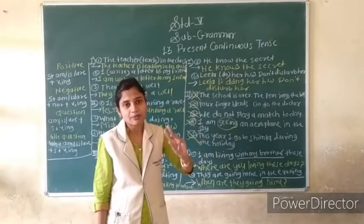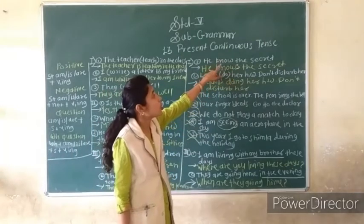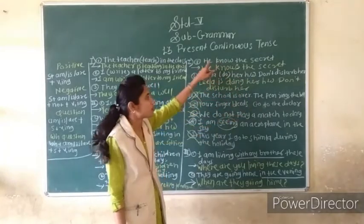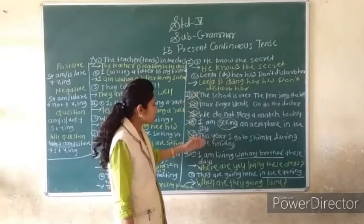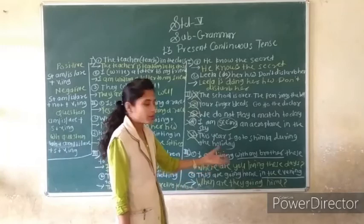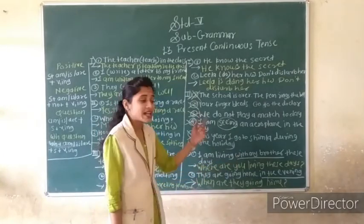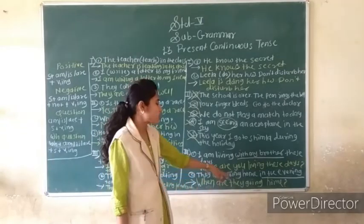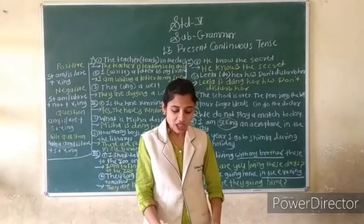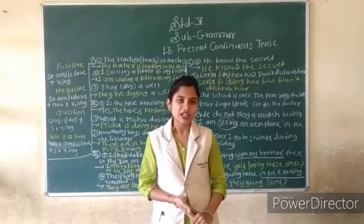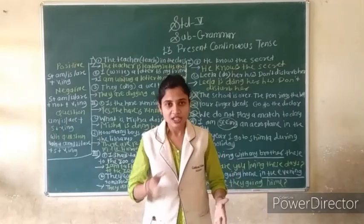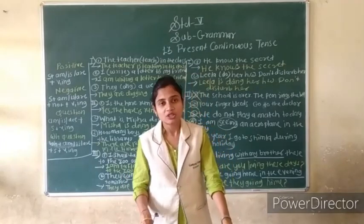Page number 33: Simple present and present continuous — He knows the secret; Leela is doing her homework. Second question: incorrect sentences identified. Third question: WH questions — I am living with my brother these days; Where are you living these days? They are going home in the evening; When are they going home? Fourth question: write ten imaginary sentences in present continuous tense. Like this our lesson on present continuous tense is complete. Thank you.